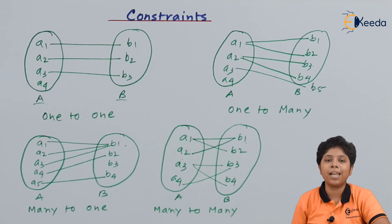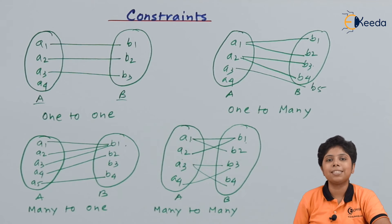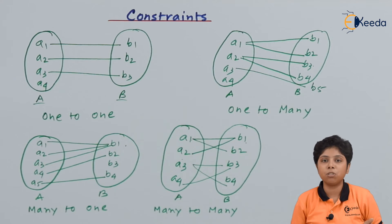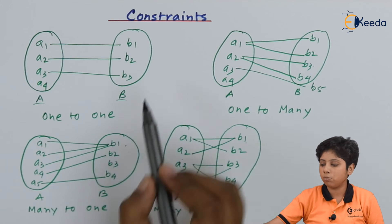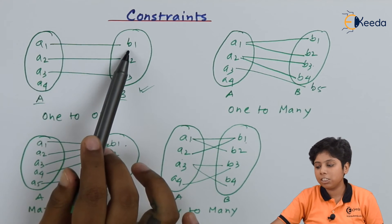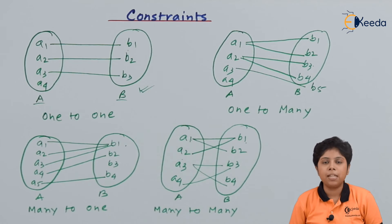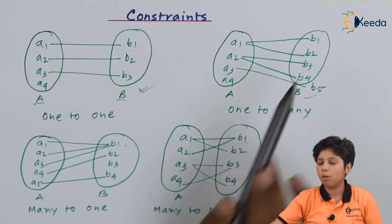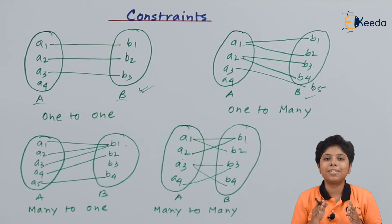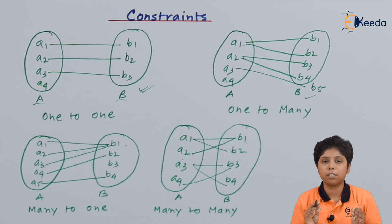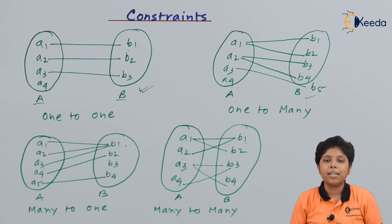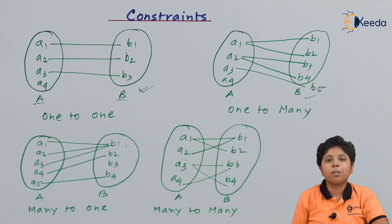When choosing a constraint based on the need of the database — say for an instructor and student entity set with an advisor relationship — if a student is in a personal advising arrangement with one instructor, we choose one-to-one. If a group of students can be advised by one instructor, then we use one-to-many. The mapping constraint on cardinalities is entirely based on the conditions or the need of the database.